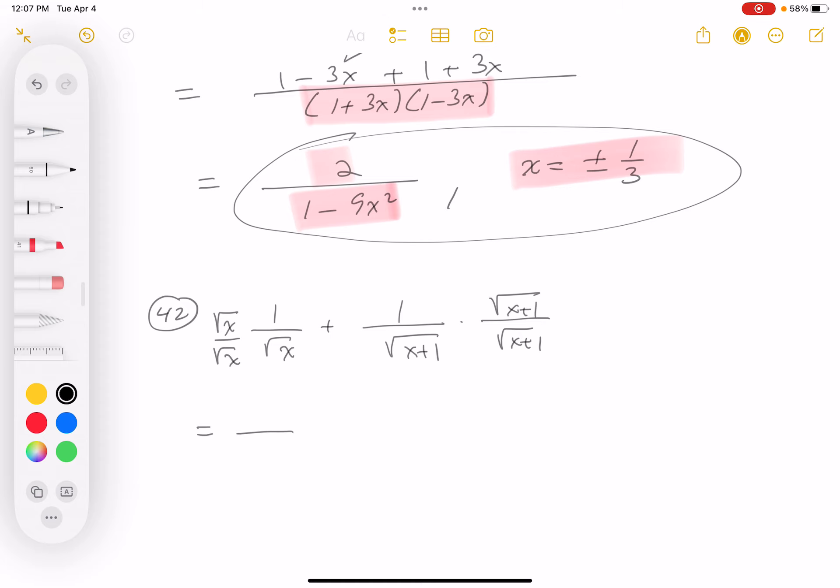So what do you get there? You're going to get x on the bottom and root x on the top. Plus, here you get x plus 1, and then you get root x plus 1 on top.